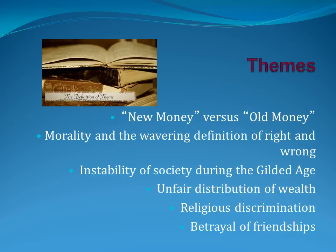As we read this novel, it's very interesting to see what's happening to the money. We see the unfair distribution of wealth—the charwoman who sells those letters to Lily is scrubbing away at the stairs while Lily is going up to have a clandestine meeting with Lawrence Selden. There's religious discrimination in the treatment of Simon Rosedale, and you can read how Edith Wharton was criticized for the way she treats certain classes of people. And obviously there are many betrayals of friendship.